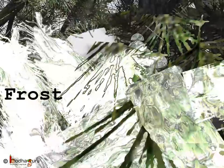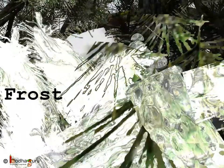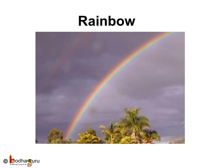Here we can see frost on the leaves. Let us see one interesting phenomenon associated with rain. If the sun comes out when it is raining, you may see the seven-colored rainbow. Raindrops bend the different colors in white light, separating them into red, orange, yellow, green, blue, indigo, and violet — the seven colors of the rainbow. In simple words, rainbows are caused by the splitting of white sunlight into its component colors by the raindrops.